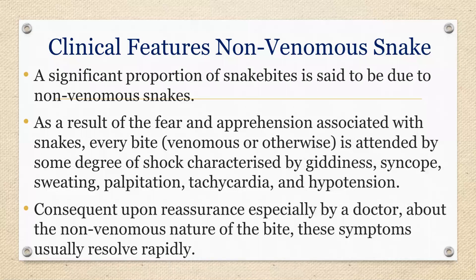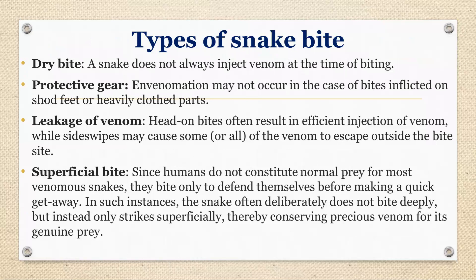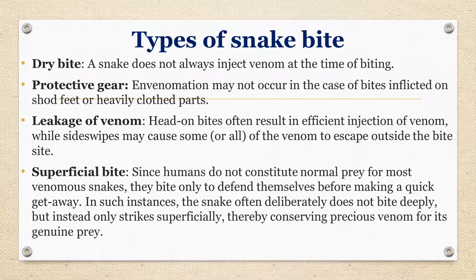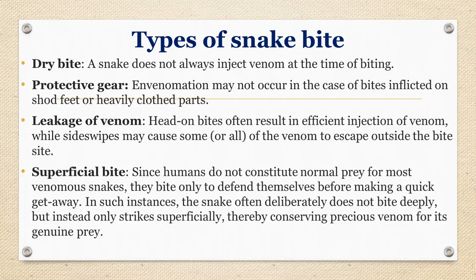Types of snake bite: dry bite — a snake does not always inject venom at the time of biting. Remember: snakes are our friends, don't kill them when you see them. In their first bite they never inject poison. Only if you irritate them does their bite become venomous. The second type is a protective bite — the snake wants to protect itself from human beings, and in that protective bite it also does not inject poison.